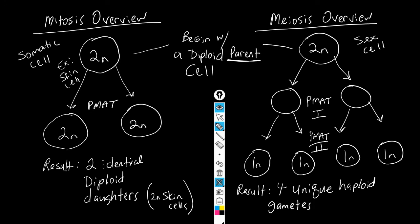Gametes is a new term referring to either sperm or egg, depending on whether the sex cell is from the testes — resulting in four unique haploid sperm — or from the ovaries. That gives you a mitosis and meiosis overview, which will help you answer questions on the Google form related to genetic diversity and the difference between sexual and asexual processes.